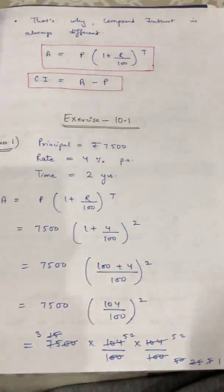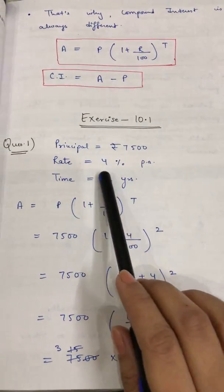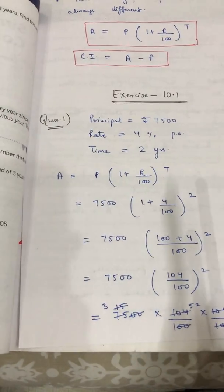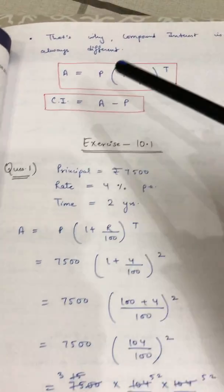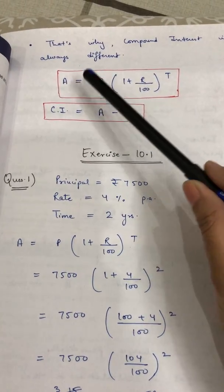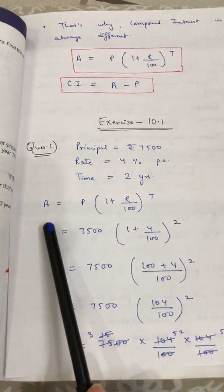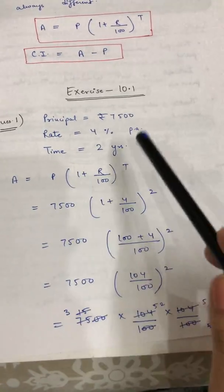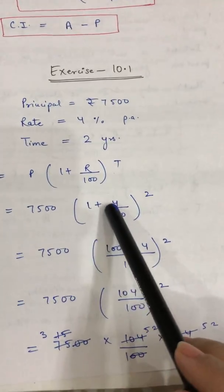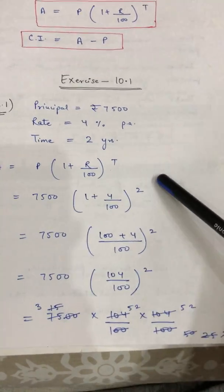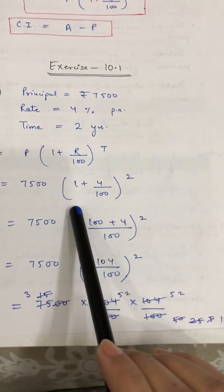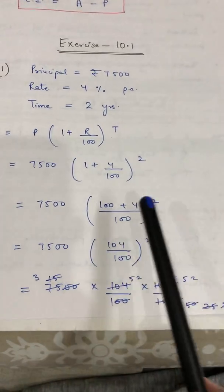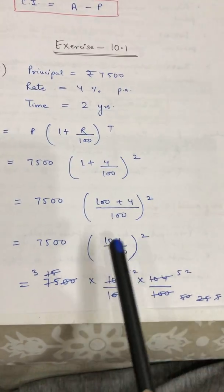So: Principal = 7,500; Rate = 4% per annum; Time = 2 years. The amount formula is A = P × (1 + R/100)^T. We always find the amount first, then compound interest. Putting in the values: A = 7500 × (1 + 4/100)^2. Taking LCM: 1 + 4/100 = 104/100. So A = 7500 × (104/100)^2.